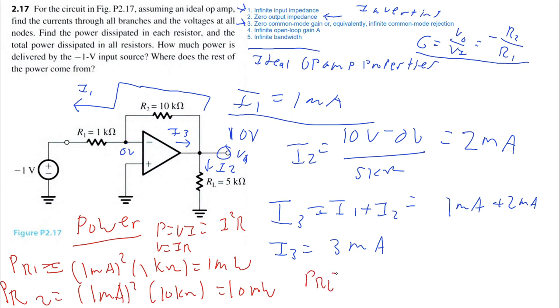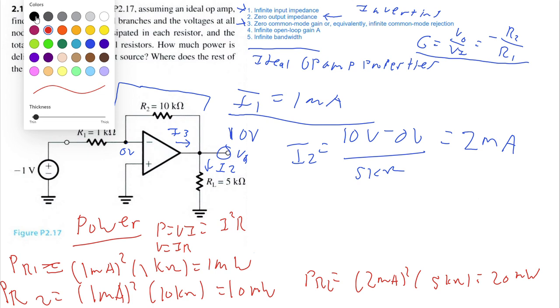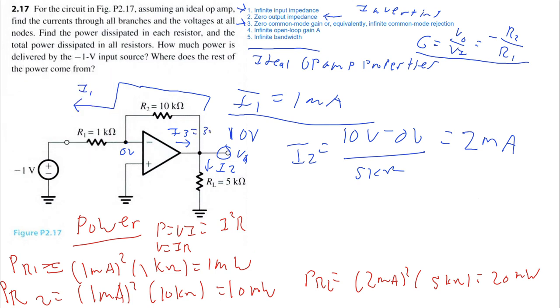And then my power dissipated by the load resistance is going to be I2, 2 milliamps squared times 5 kilo ohms. So that's 5 times 4 is 20 milliwatts. So the total power dissipated will just be the summation of all of those resistors. So total power dissipated is equal to 1 plus 10 plus 20 is equal to 31 milliwatts.